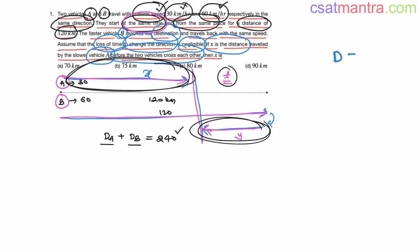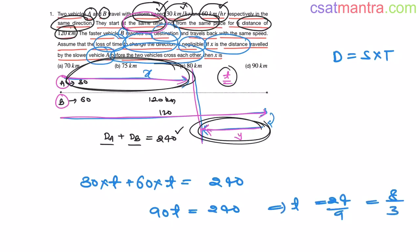So distance traveled by vehicle A and vehicle B in T time is 240. Now what is the distance formula? That is speed into time. What is the speed of vehicle A? 30 times T. Distance traveled by vehicle B. Speed of vehicle B that is 60 and time is T, equals 240. Now 90T is equal to 240. T is equal 24 by 9. This is 8 by 3. So 8 by 3.